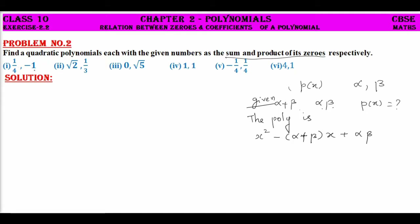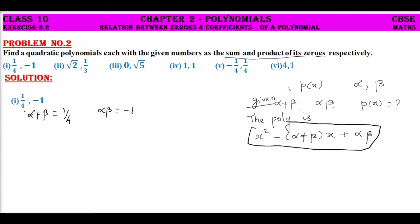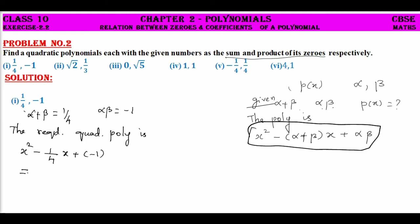We will start with the first set of numbers: 1/4 and −1. That is, alpha plus beta (sum of roots) = 1/4 and alpha into beta (product of roots) = −1. Now the polynomial is X square minus (alpha plus beta) X plus alpha beta. Therefore, the required quadratic polynomial is X square − (1/4)X + (−1), which simplifies to X square − (1/4)X − 1. This can also be written by multiplying throughout by 4 as 4X square − X − 4. So this is the required quadratic polynomial.